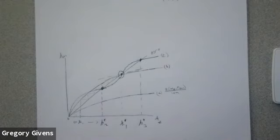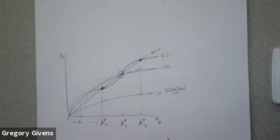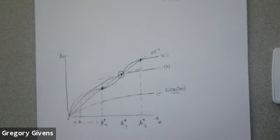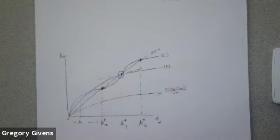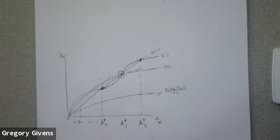This OLG model does not rule out this behavior as a possibility. Unless we're willing to make more rigid assumptions about preferences and technologies, we can't predict exactly what's going to happen. We have to impose further restrictions to generate a scenario like the Solow model — a unique stable steady-state equilibrium. The basic OLG model as described so far doesn't rule out Scenarios A or C.